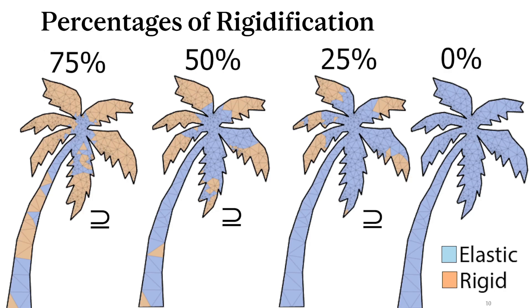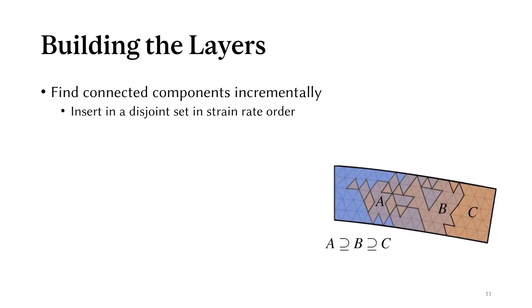Rigid layers are built incrementally, always including the previous layer as a subset. To build the layers, we start by finding connected components.